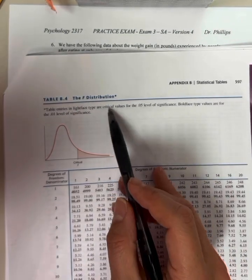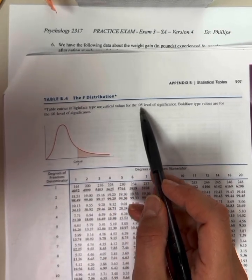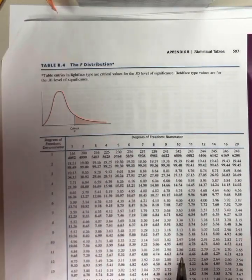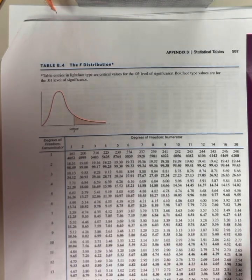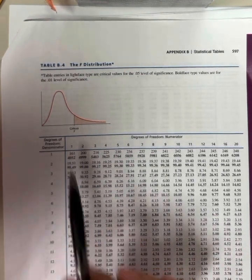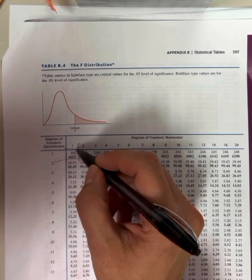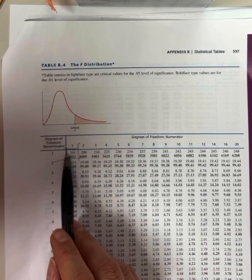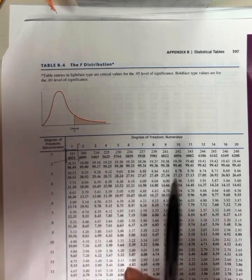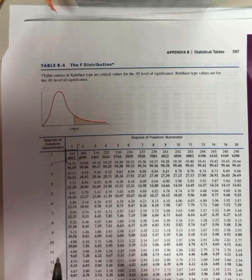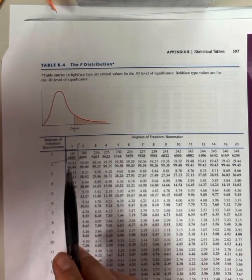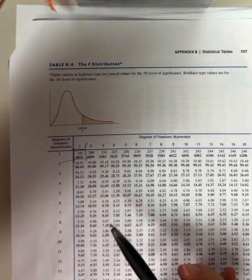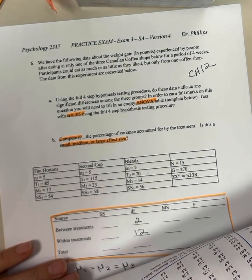The F distribution. Table entries in light face type are critical values for the alpha of 0.05 level of significance. So if you look, and this might be clearer on a digital copy or on the copy that you hopefully have right in front of you, each cell of the table has two numbers. The top number is in regular font and the bottom number is slightly darker, it's bold. So the one that's not as dark is for 0.05 and the one that is darker is for 0.01. Our question asked for alpha of 0.05.